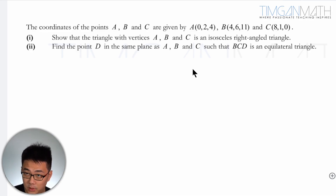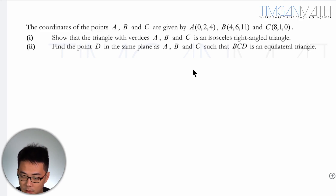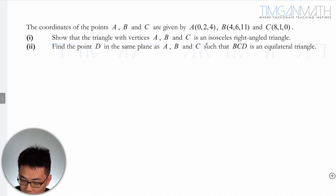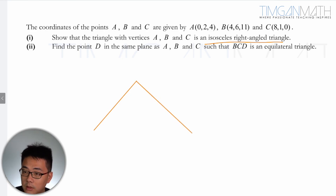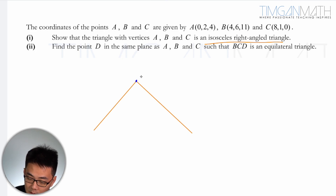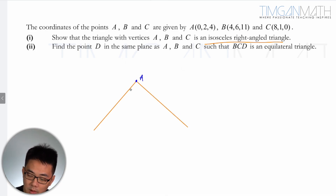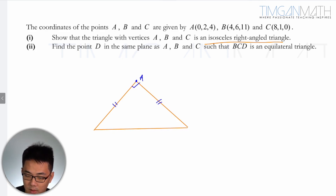I'm going to do the first part because I think it's pretty straightforward, and I'm going to use the first part result to understand what's going on for the last part. So show that the triangle with vertices A, B, and C is an isosceles triangle. So if I have A, B, and C — which is the 90-degree one — this is the isosceles triangle here with points A, B, and C.